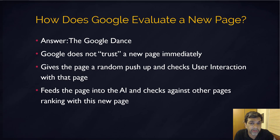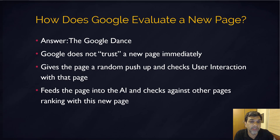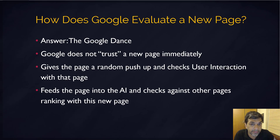So how does Google evaluate a new page? Suppose you were to go out there and publish a new page — how does Google know whether this page has good content or not? How does it know whether it should be pushing this page up and that it has better content than other pages that exist on the web?